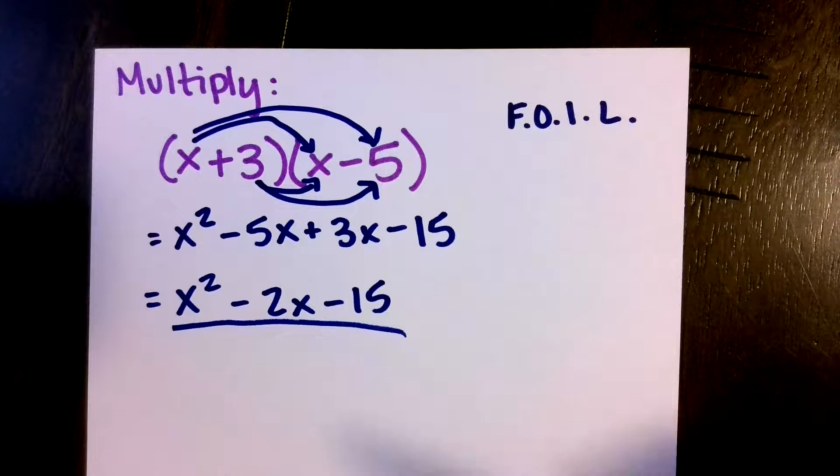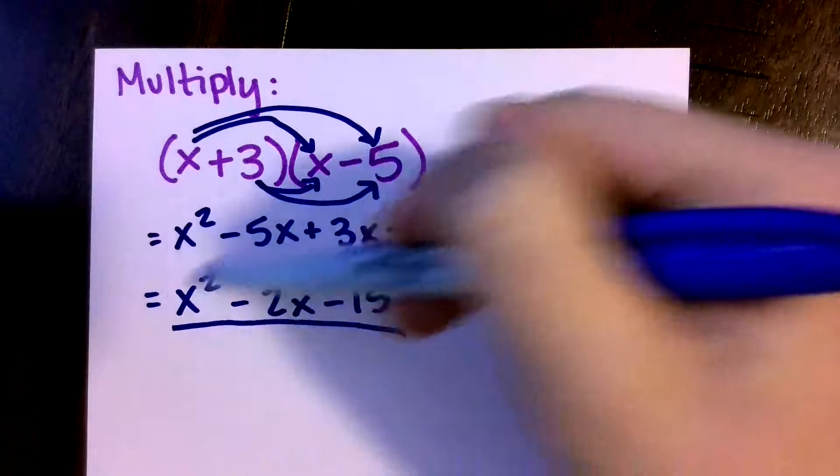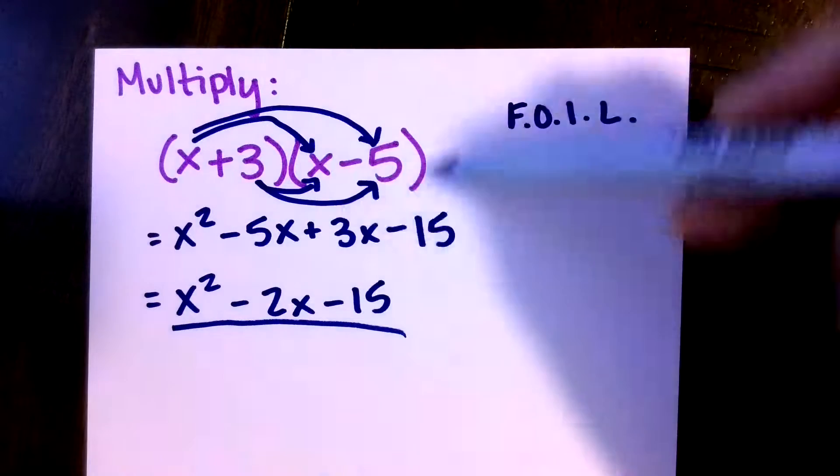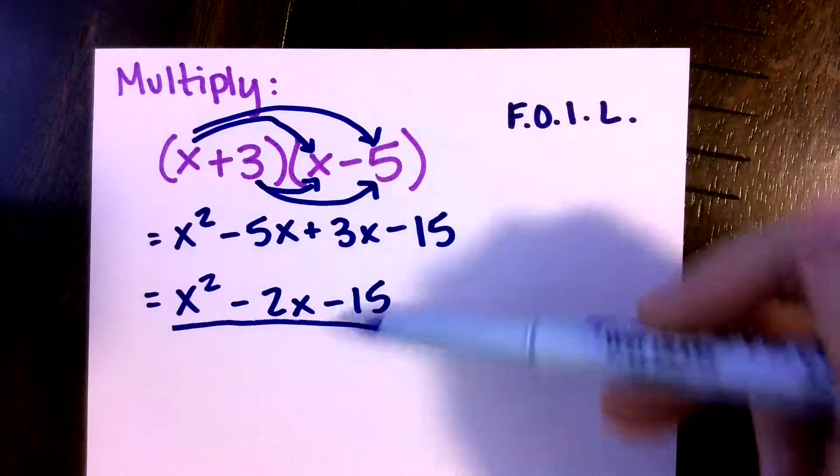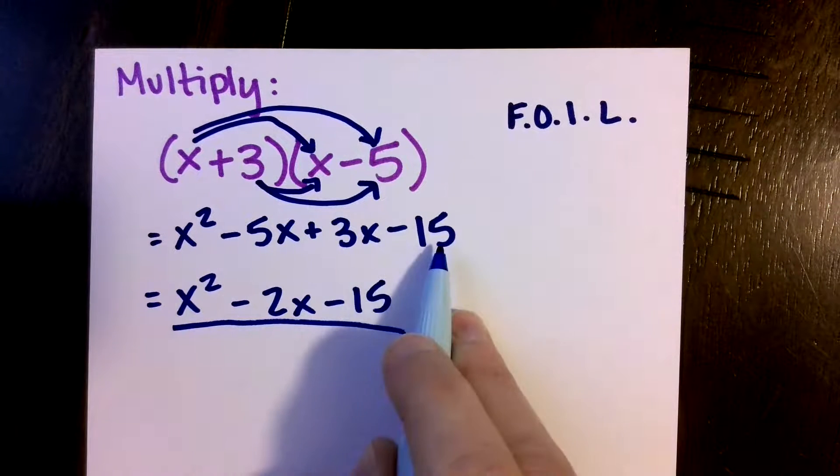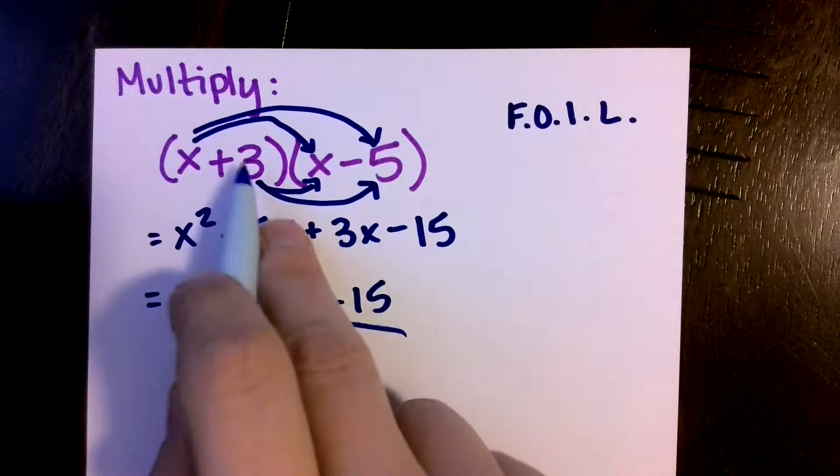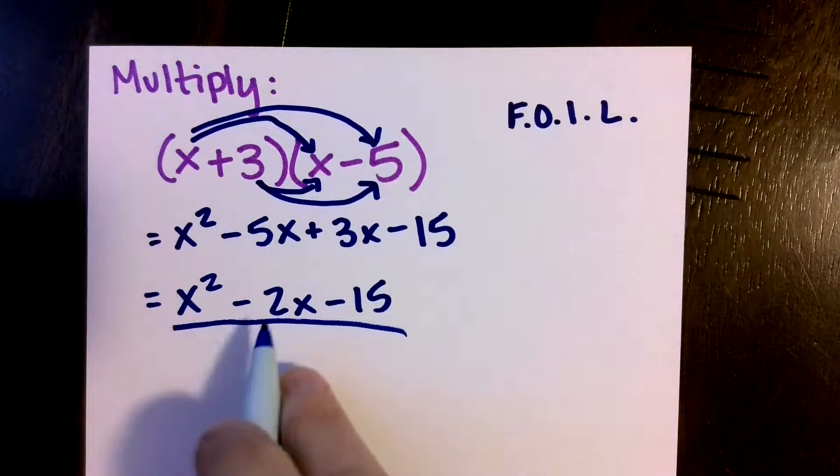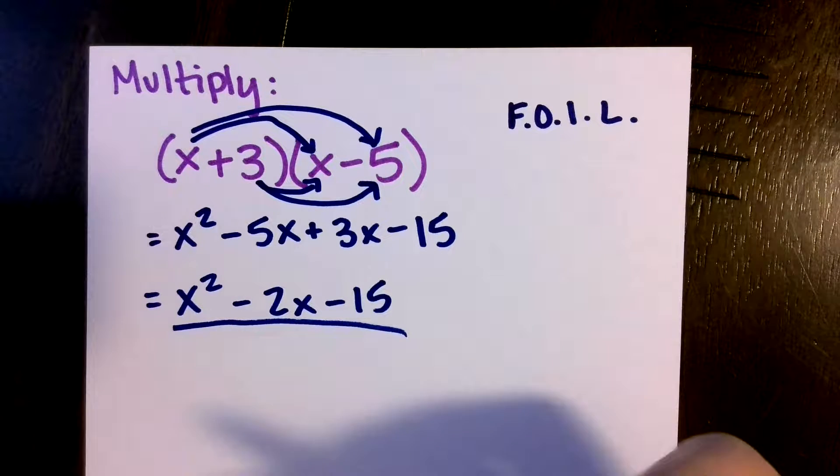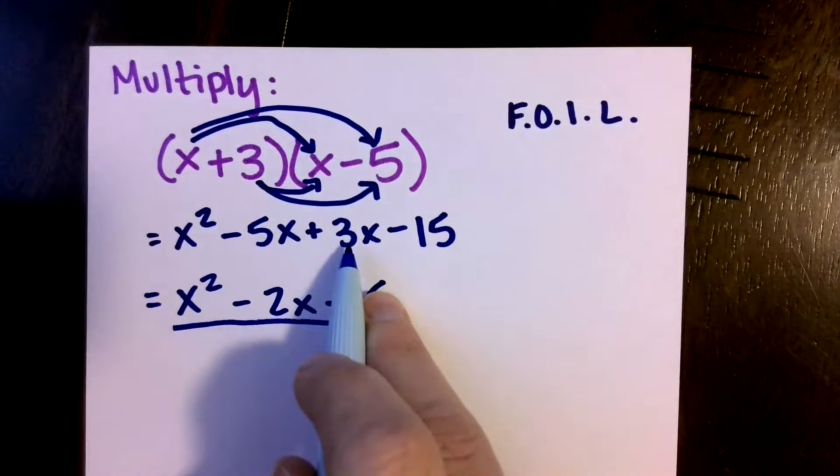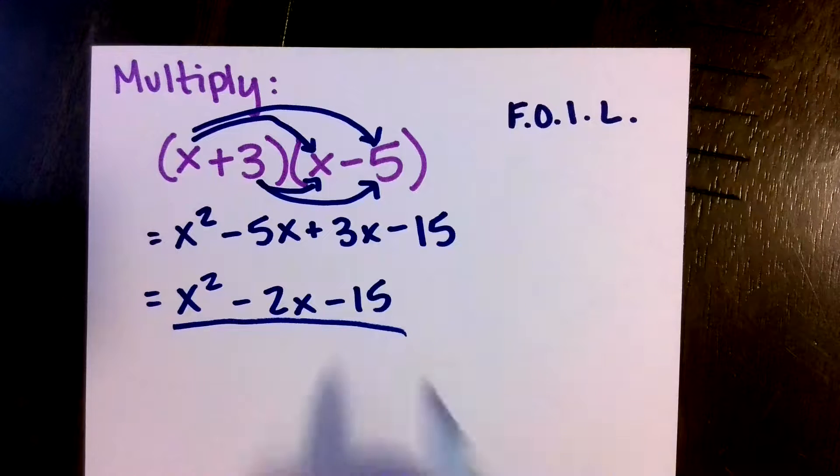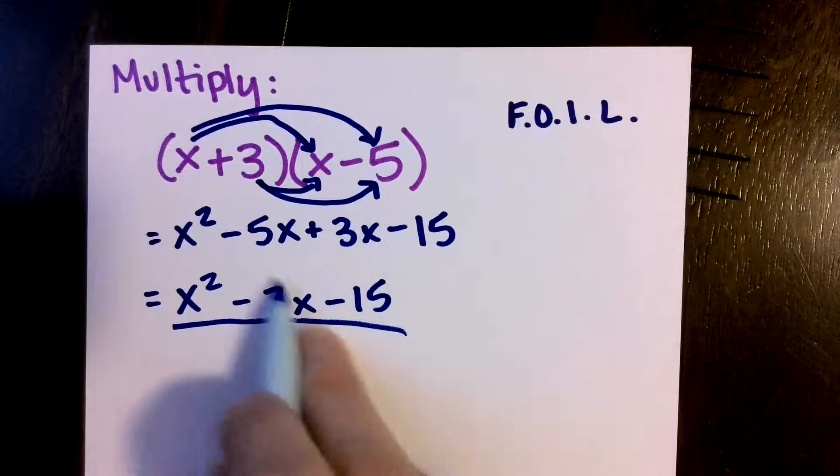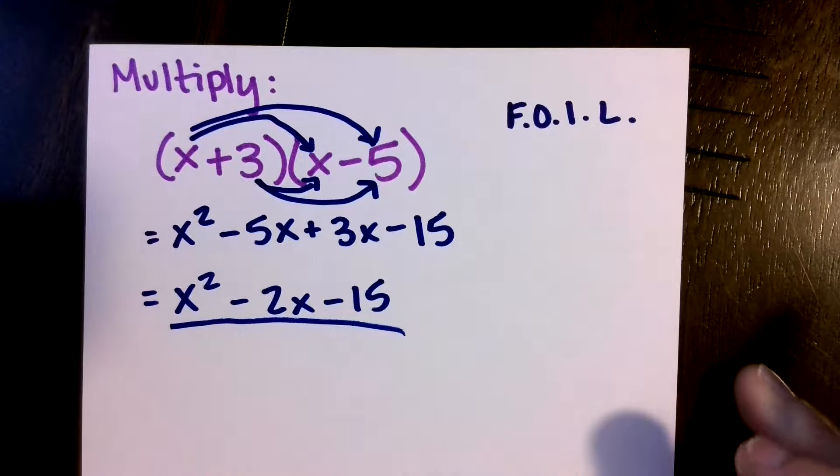So if we were going backwards, this is what factoring is going to do, is start here, and we're trying to come up with those two binomials that multiplied to be this. Notice that the negative 15 didn't change at all. That was just what we got when we multiplied 3 and negative 5. And then negative 2 is the sum of negative 5 and 3. So that's why whenever we're factoring, we look for two numbers that multiply to be negative 15 and add to be a negative 2.